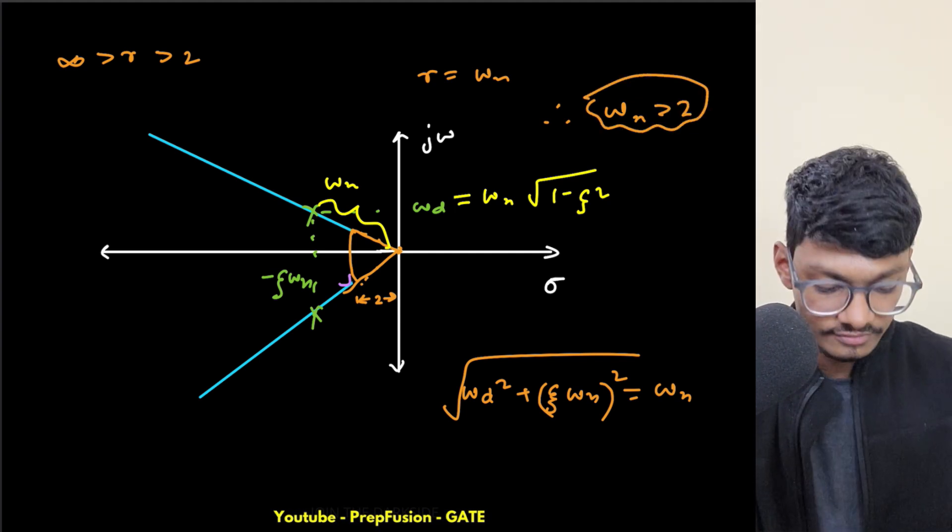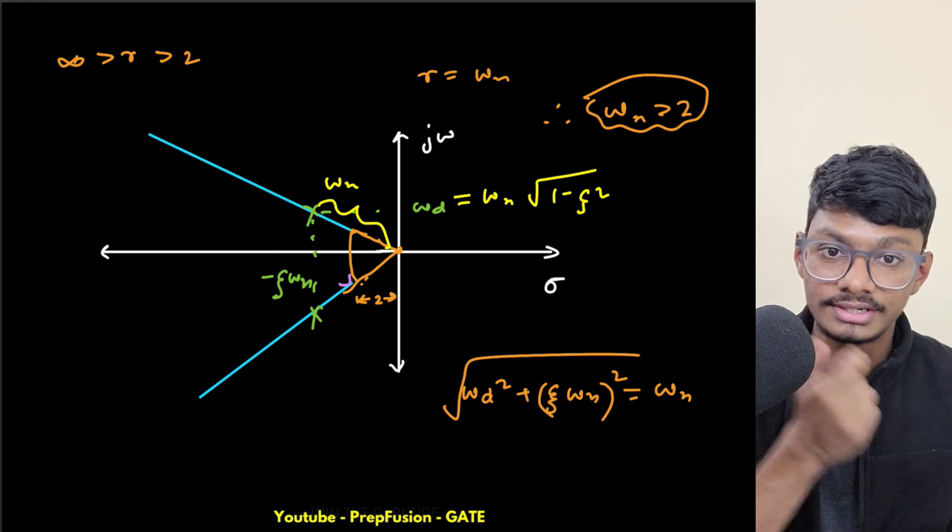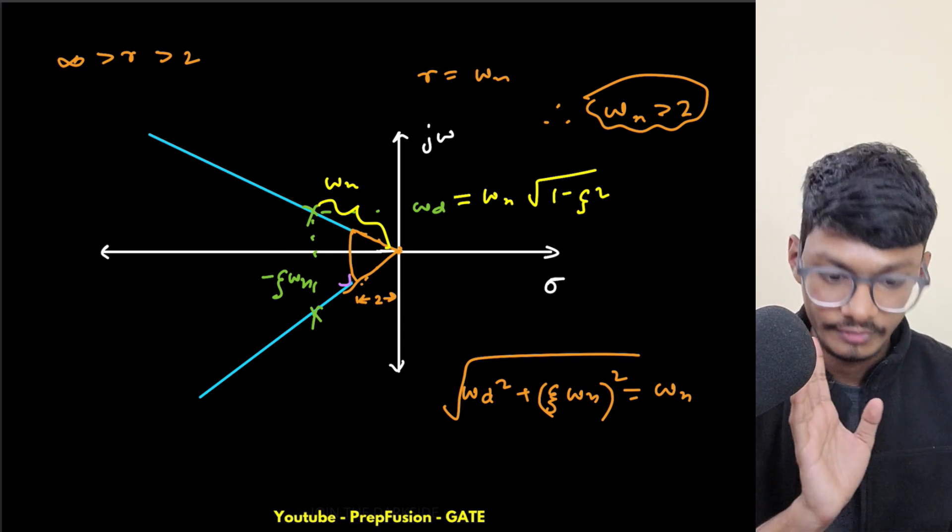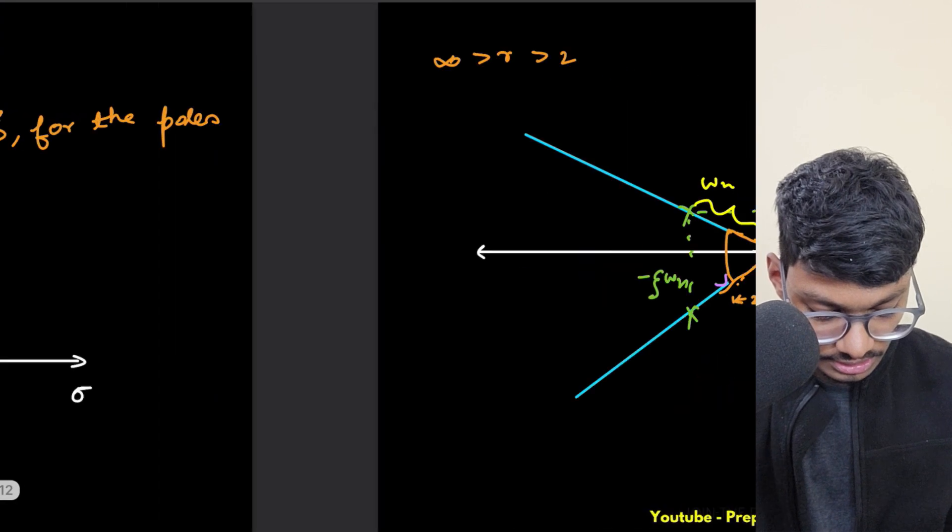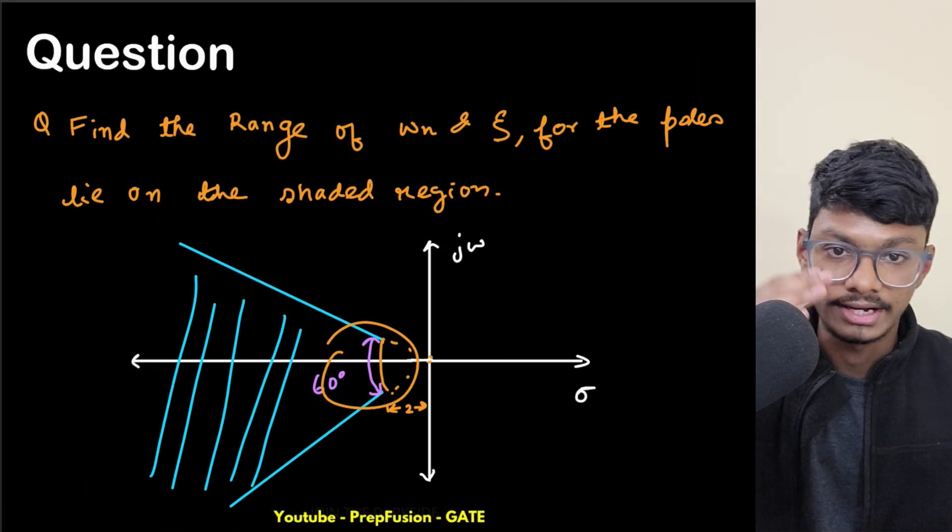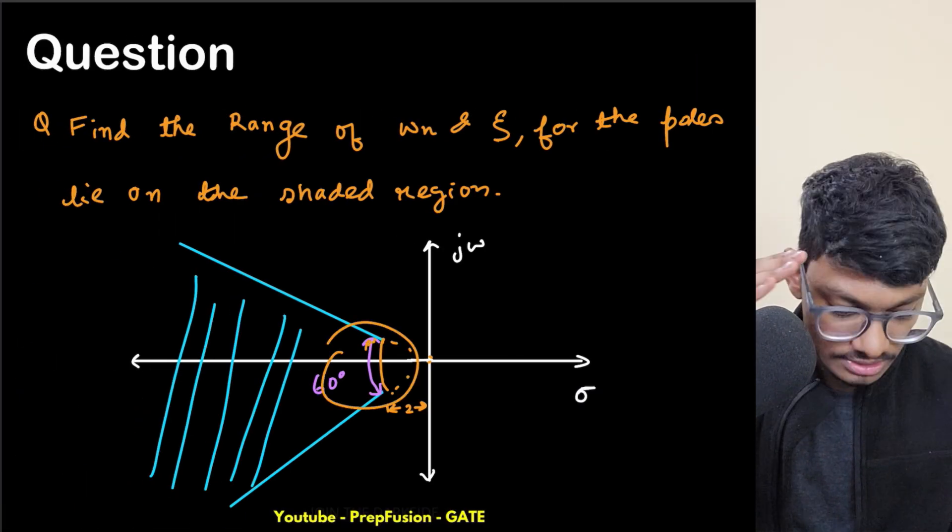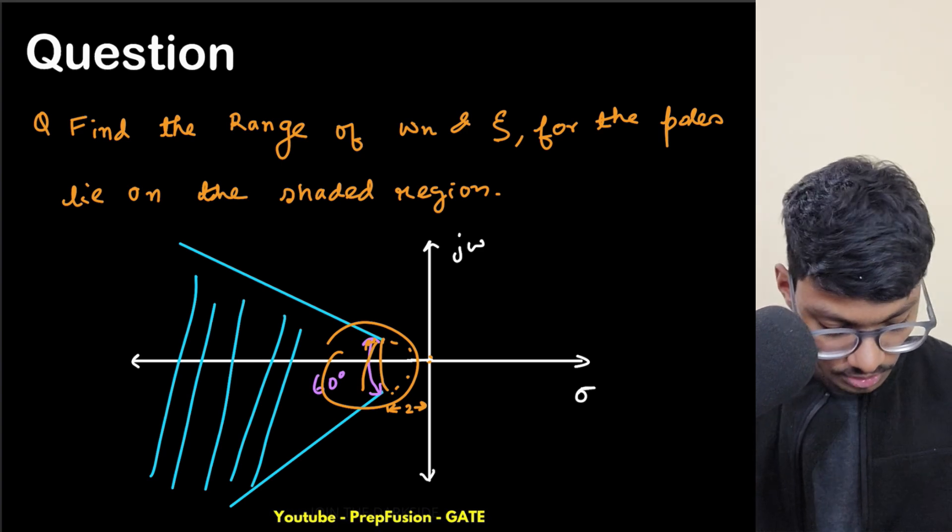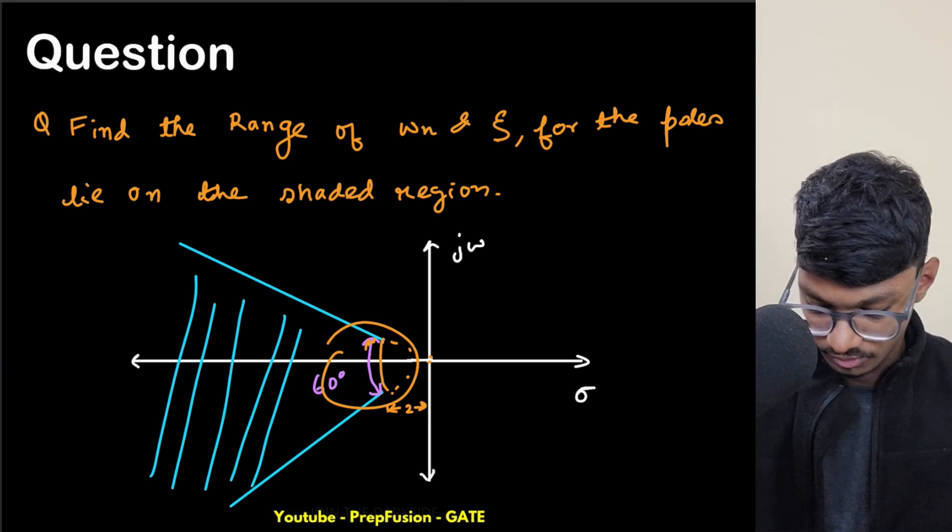If something like this was in the option, this is one of the correct alternatives. Now of course we have to find the condition for zeta. For zeta, what we remember: they have told us that this angle is 60 degrees, this angle is going from 60 to zero.